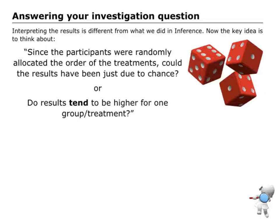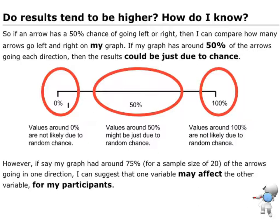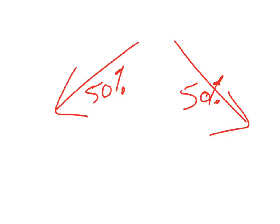Going on to the answer in the investigation question, though, this is one of the key ideas. And we're still talking about that could these results have been just due to chance? Because we randomly allocated the order, could I have got results like this just by random chance? Or, do those results tend to be higher for one of the groups? So, what I want you to think about is an arrow. When I draw an arrow, I could draw an arrow going that way, or I could draw an arrow going that way. There's two possible outcomes. So, there's a 50% just by random chance, the 50% chance, I get an arrow going that way, and a 50% chance, I get an arrow going the other way. Just random chance.